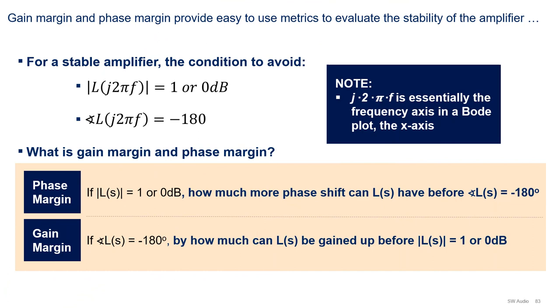From the previous slide, we know that to achieve stability, we must avoid the L equal -1 point. But how do we know how stable we are? That is where gain and phase margin come into play. If the magnitude of L equals 1 or 0 dB, phase margin is how much more phase shift can L(s) have before the phase of L(s) equals -180 degrees. Conversely, if the phase of L(s) equals -180 degrees, gain margin is how much L(s) can be gained up before the magnitude of L(s) equals 1 or 0 dB. In other words, both gain and phase margin tell us how far away we are from the L equals -1 point.